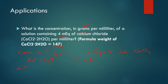Applying the formula: MEq = weight (mg) / (molecular weight / n). The weight in milligrams equals the milliequivalents × molecular weight / n, which is 4 × 147 / 2. Calculating: 147 × 2 = 294 milligrams. The question asks for the answer in grams, so we divide by 1000 to get 0.294 grams per milliliter.